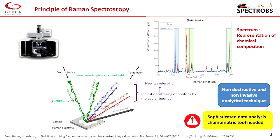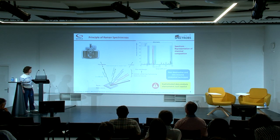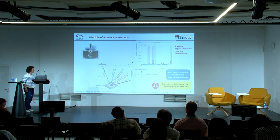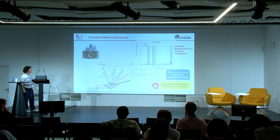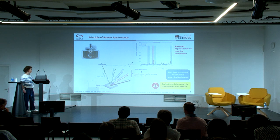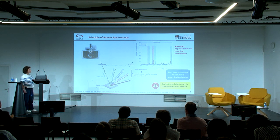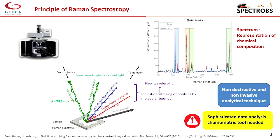As a reminder, what is Raman spectroscopy? We have an incident light that focuses through an objective onto the sample, and there is interaction with the light producing scattering. For photons scattered with the same energy level, it is Rayleigh scattering. But some photons have a different energy level, and this is Raman scattering — inelastic scattering of the photon with the molecular bond. The Raman spectrum is the intensity of scattered light plotted against the Raman shift, and the spectrum is a representation of chemical composition.